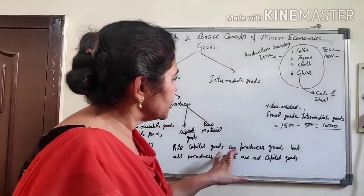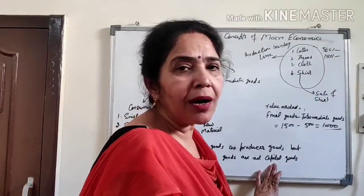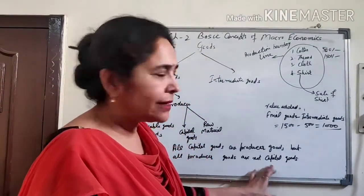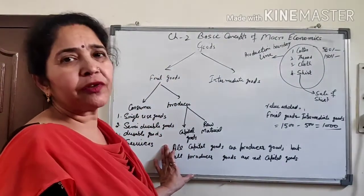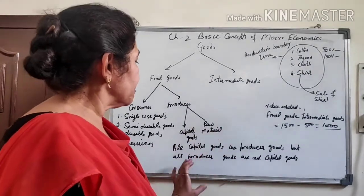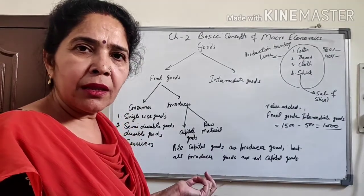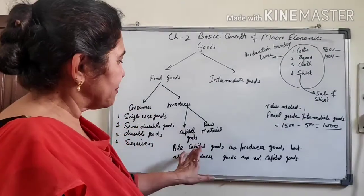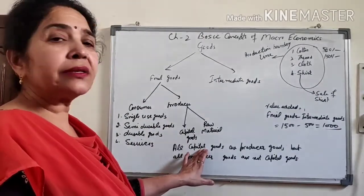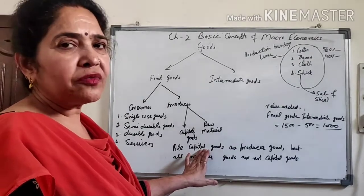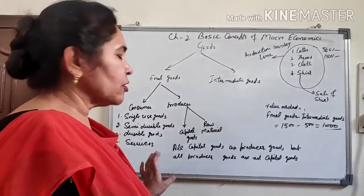All capital goods are producer goods, but not all producer goods are capital goods. This is because capital goods include only durable goods used for the production process. But producer goods include durable, semi-durable, and non-durable goods — three categories. So capital goods, being only durable and used for a long time, are a subset of producer goods.